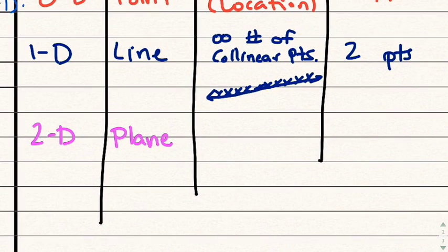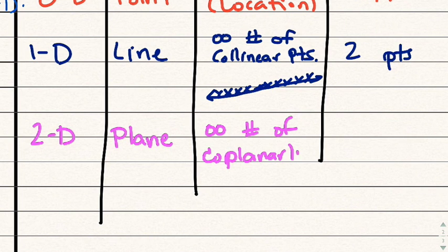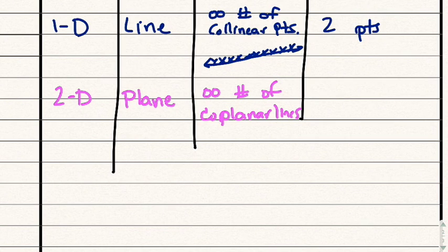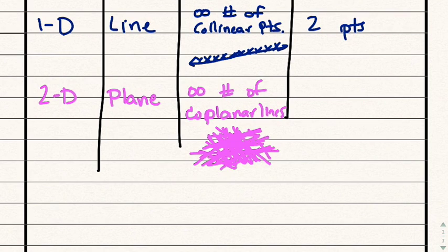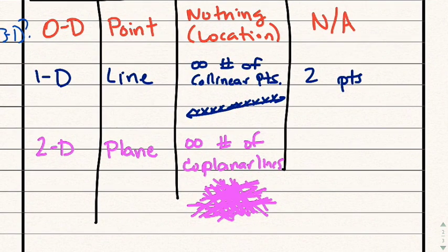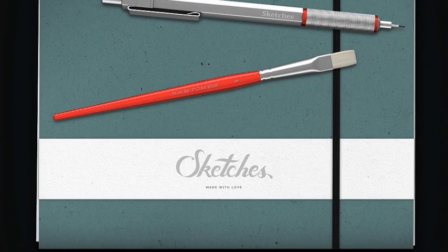Moving on to 2D — this is what we call our plane. In terms of composition, we need an infinite number of coplanar lines — lines that are all flat. If you recall the yarn demonstration in class, it wasn't until all our hands were at the same level that we actually had a plane; otherwise you just had a weird conglomeration that turned into a 3D surface. What do you actually need to identify a plane? Let's go back to Sketches and process this.